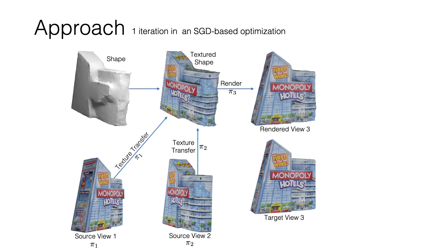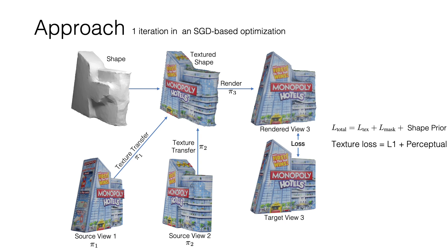We now render the textured shape from the third camera viewpoint. In practice, for efficiency, we texture only those points on the shape that will be used for rendering the target view. This is one of the major contributions of our approach. The rendered view is compared against the ground truth target view to form a loss, which comprises L1 and perceptual texture losses, a mask loss, and shape priors. The loss is then backpropagated to update the vertices of the shape and the three camera pose estimates.